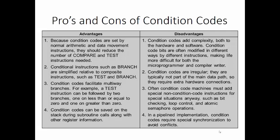Disadvantages is that it adds complexity to both the hardware and software. Condition codes are often modified in different ways by different instructions, and this makes life difficult on both the microprogrammer and the compiler writer. Condition codes are irregular. They are typically not part of the main data path, so they require extra hardware connections. Often condition code machines must add special non-condition code instructions for special situations anyway. In a pipeline implementation, condition codes require special synchronization to avoid conflict.